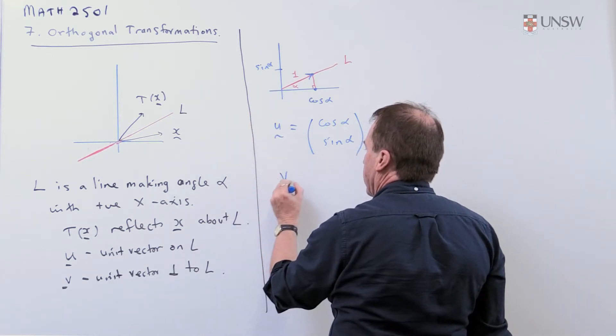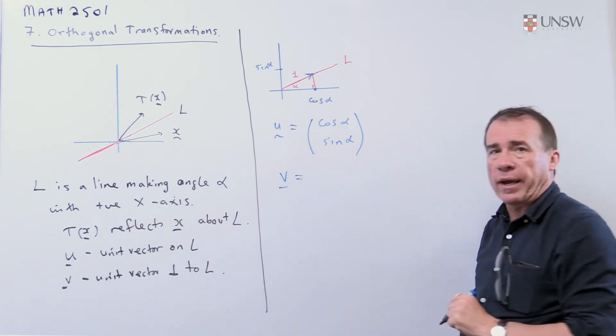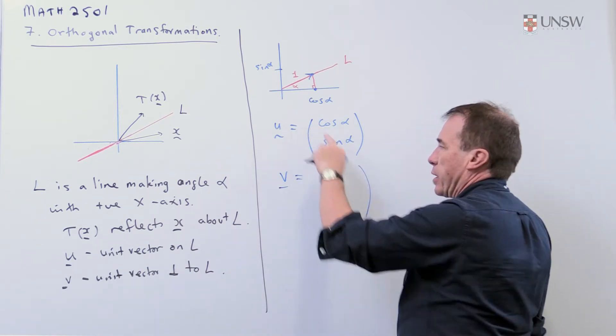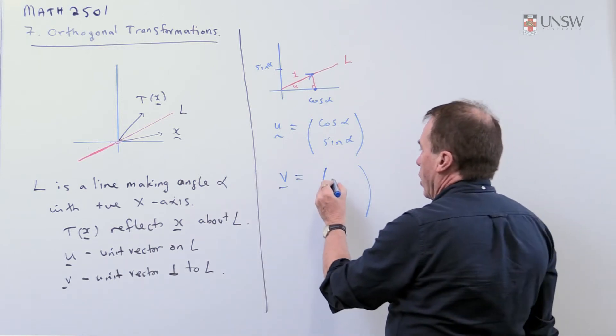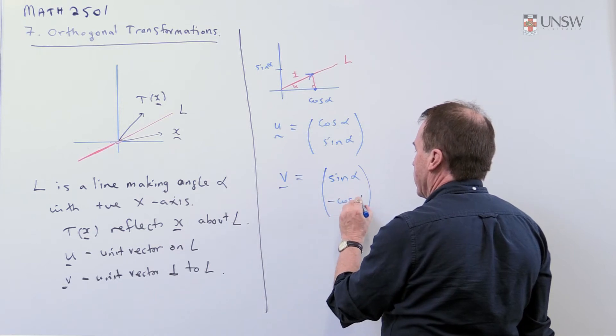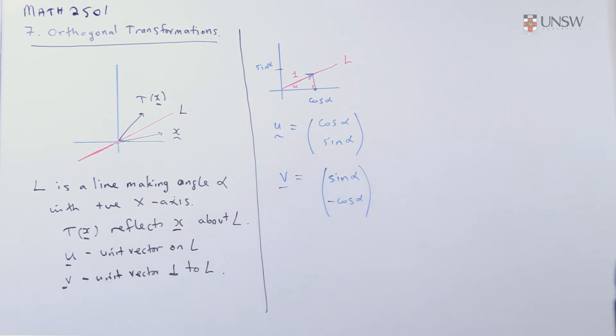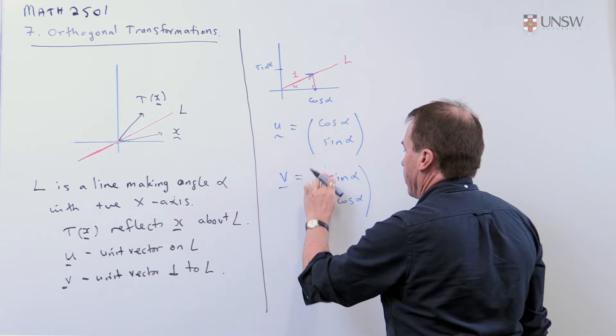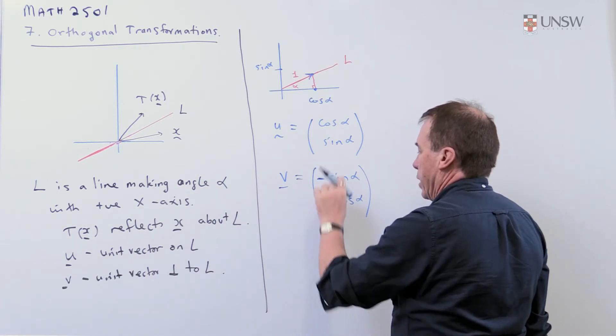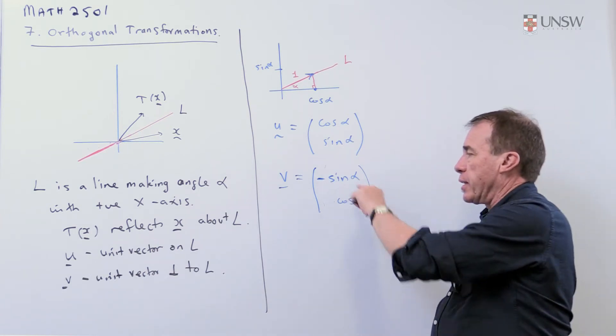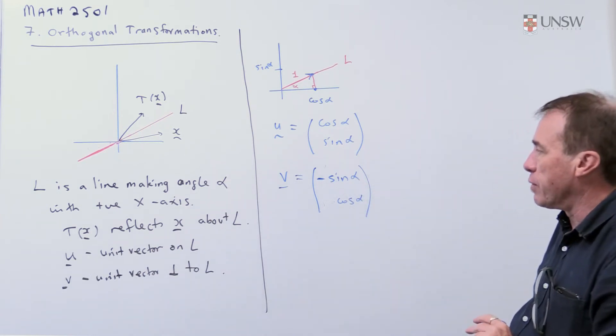So I'm going to put u equal to that. Now I want v to be a unit vector perpendicular to L so that simply means its dot product with that has to be 0. So all I'm going to do is I'm going to put a sin alpha perhaps and a minus cos alpha there. It doesn't matter which way we're going to do it. I'll just check that I'm being consistent. In fact, I'm going to put the minus up the top. It doesn't matter. You can put the minus either one. So these dot product to give you 0 and again you can check this is a unit vector. So there's my u and v.